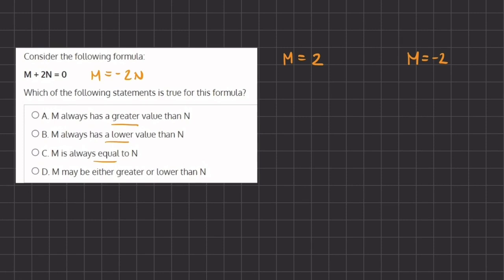So if we plug in 2, we have 2 equals negative 2n, and if we divide negative 2 on both sides in order to isolate n, we have negative 1 equals n.